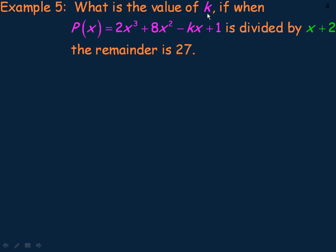Another example: we're asked to find the value of k. Notice that k is the linear coefficient, the coefficient of the linear term, or the x term. We're told that if we take this polynomial and divide it by x plus 2, we get a remainder of 27. So we're asked to find what number k has to be in order for that to be true.